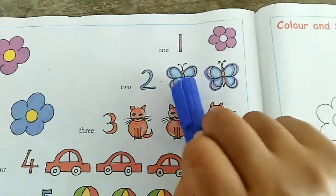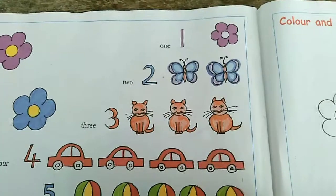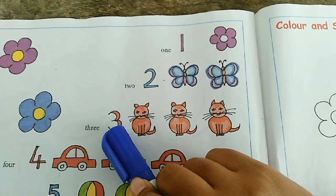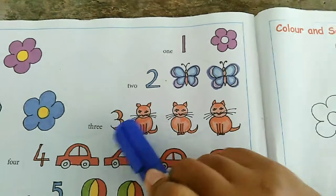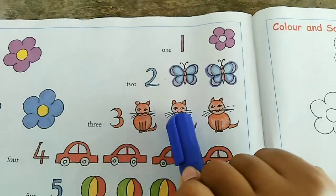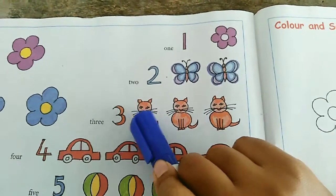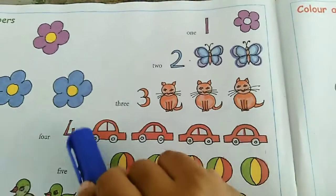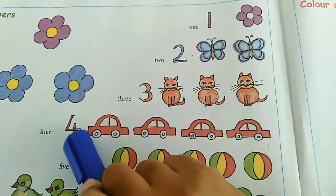Two butterflies. Two butterflies. Three. Three cats. Three cats. One, two, three. Three cats. There are three cats. This number is four. There are four cars. Four cars.